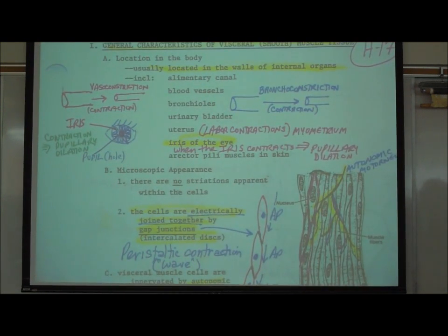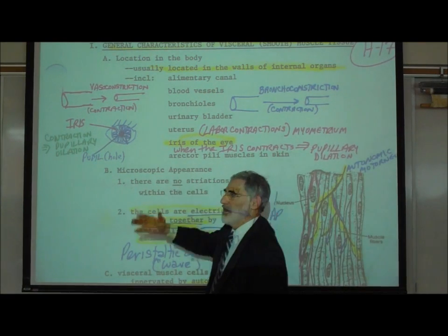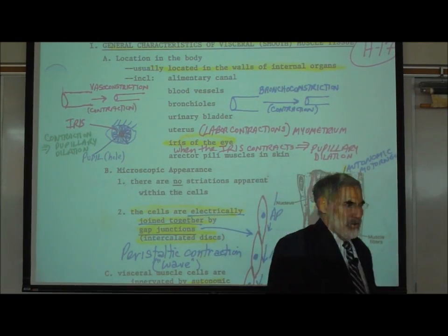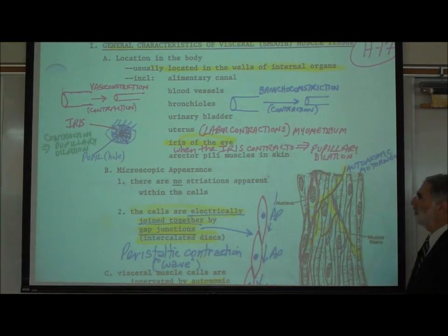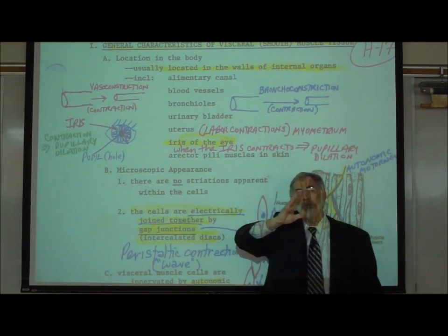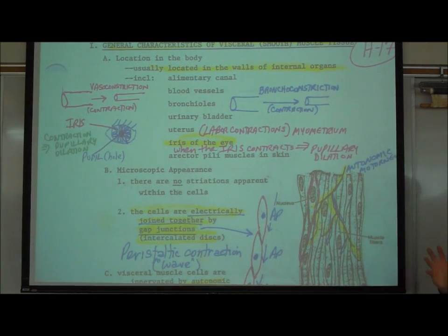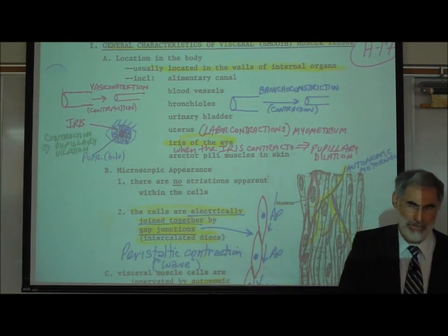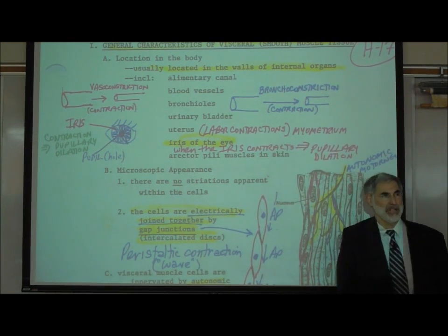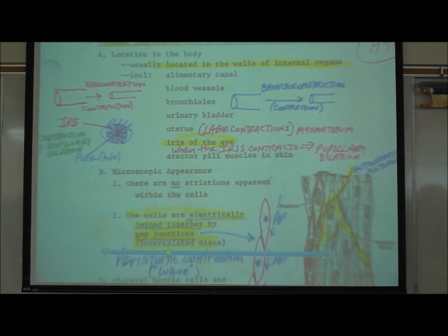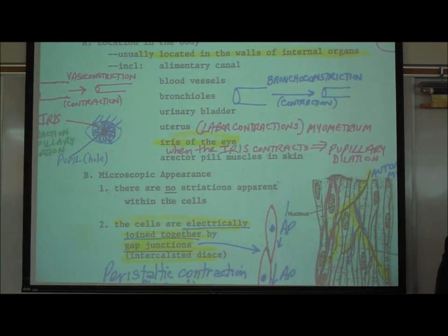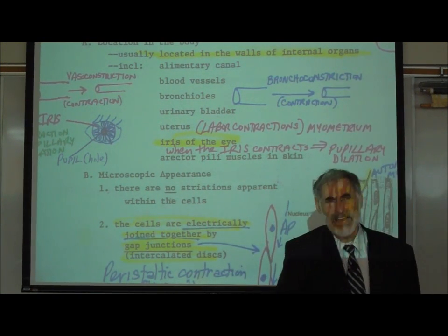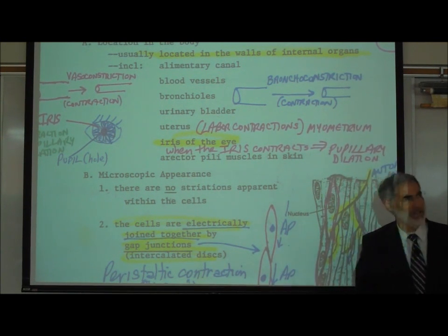There's also visceral smooth muscle in the walls of our urinary bladder — our urinary bladder contracts and pushes the urine out. There's also visceral smooth muscle in the wall of the uterus, in the myometrium, the muscular outer layer of the uterus. Its purpose is to contract during childbirth to push the baby out, creating labor contractions. Sometimes the visceral smooth muscle in the uterus contracts when a woman is not giving birth, for no reason — that's called uterine cramping, and it causes pain.